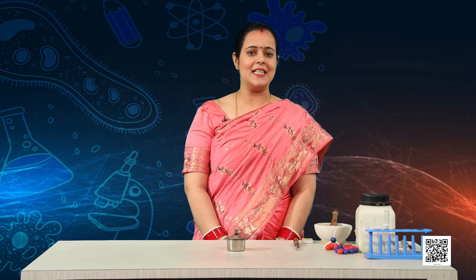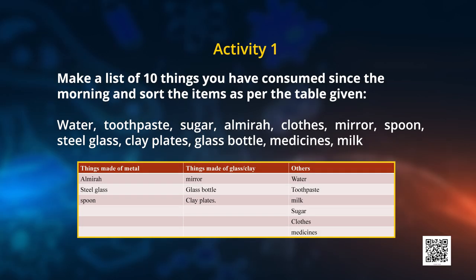You all have to make a list of 10 things you have consumed since morning, and you have to sort that list according to the table given on the screen. I hope by now you must have sorted your list, and in the first column you must have written things made of metal — almirah, spoon, etc. In the things made of glass you must have written mirror. And in the third column you must have written water, air, milk, sugar, clothes, tablets, maybe paper, and so on.